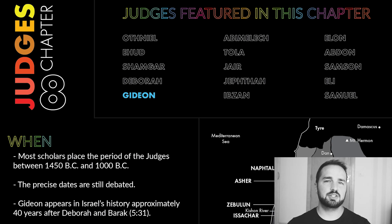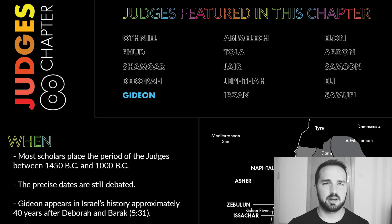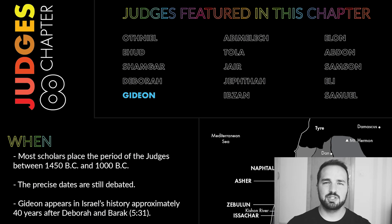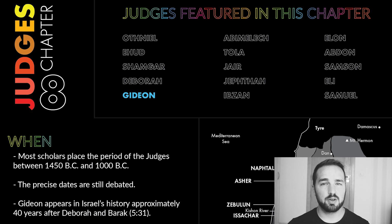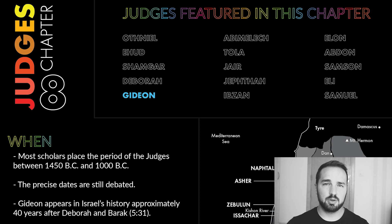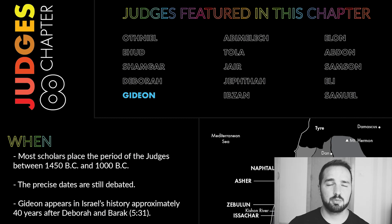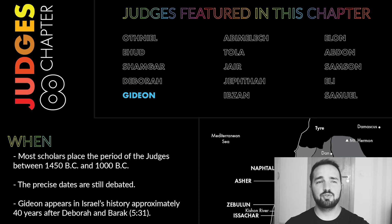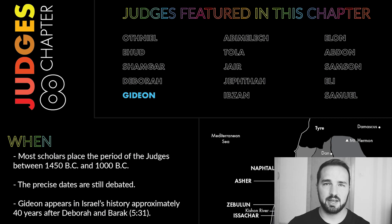When did the events of the book of Judges in this story particularly happen in the timeline of the world? The period of the Judges is dated by most scholars to between 1450 and 1000 BC, and Gideon's story appears about 40 years after Deborah, who's the last judge that we talked about, who defeated the Canaanite army with the help of Barak and Jael and all of those characters.